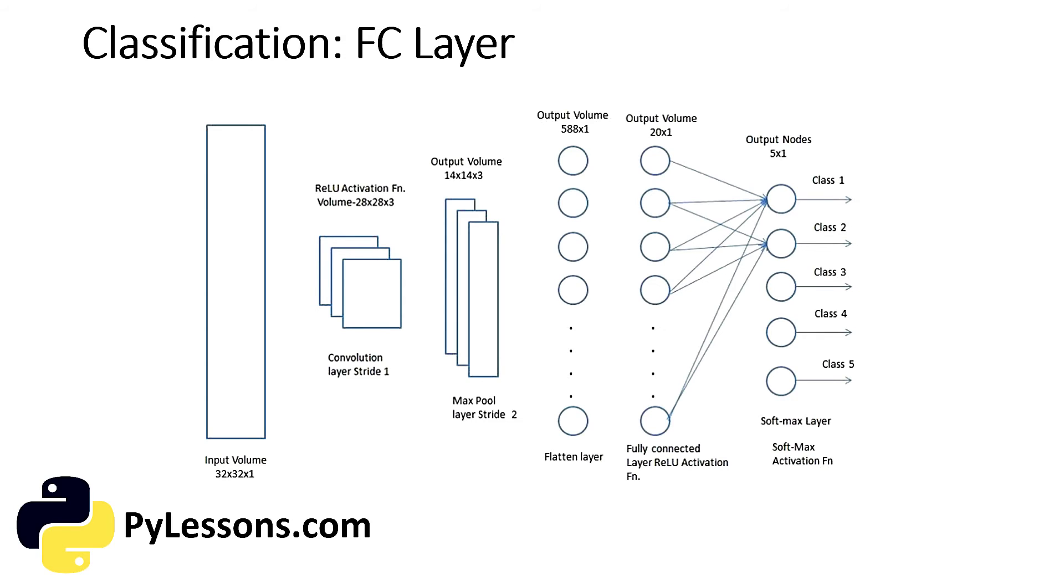Now that we have converted our input image in a suitable form, we shall flatten the image into a column vector. The flattened output is fed to a feed-forward neural network, and backpropagation is applied to every iteration of training. Over a series of epochs, the model is able to distinguish between the dominating and certain low-level features in images and classify them using the softmax classification technique.